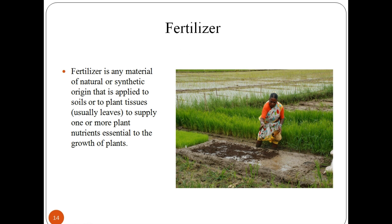Fertilizers enhance the growth of plants in two main ways. First, in the traditional sense, as additives that provide nutrients. The second mode is by which some fertilizers act to enhance the effectiveness of soil by modifying its water retention. The nutrients required for healthy plant life are classified according to elements. The three main macronutrients are nitrogen, phosphorus, and potassium.